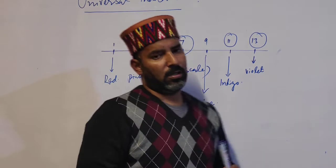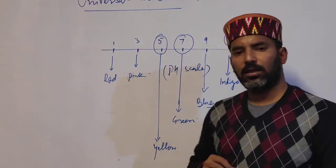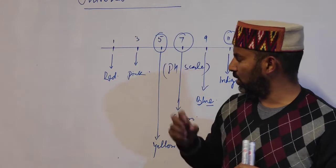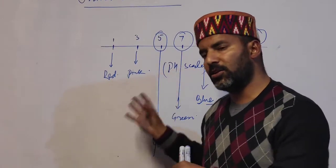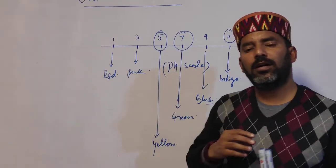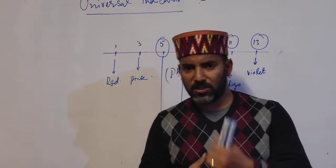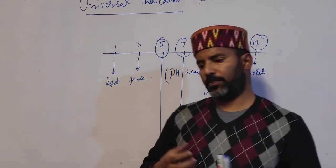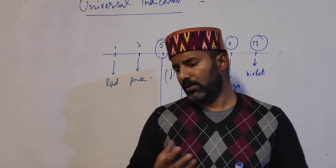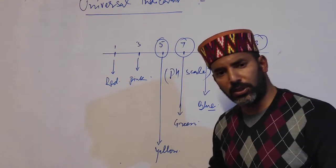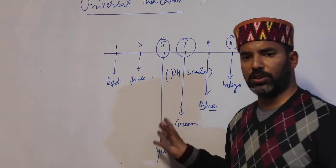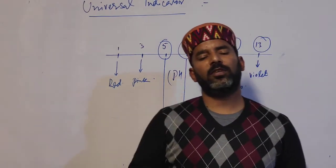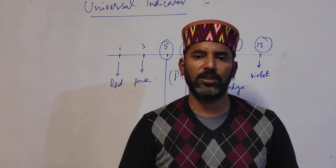So we can predict the pH of a solution by noting its color with the universal indicator. That's it for today. We have discussed acids, bases, and their properties. In the next lecture, I'll give you some practice questions based on the properties of acids and bases. Thank you, students.